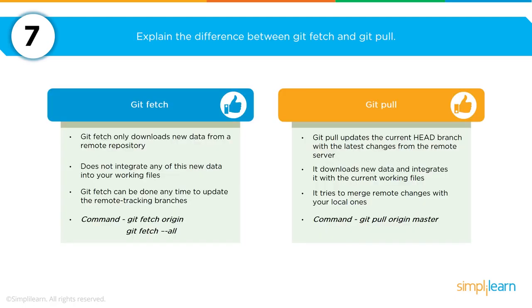There are two ways to get files from a Git repository, and you'll be asked to explain the difference between git fetch and git pull. Git fetch downloads only new data from the remote repository but does not integrate it into your working files, and it can be undone at any time. In contrast, git pull updates the current head branch with the latest changes from the remote server, downloads new data, integrates it with your current working files, and tries to merge remote changes with your local ones.